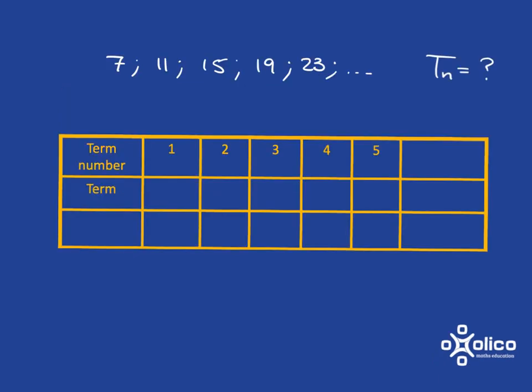I now want to look at a pattern where we don't actually have the matchstick pictures. We just have pure numbers. So let's have a look here at this pattern: 7, 11, 15, 19, 23, and it goes on, and I want you to figure out what the nth term will be.